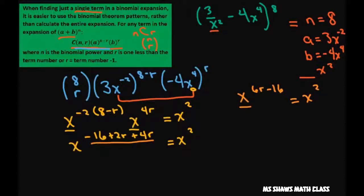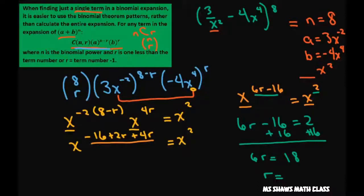Okay, then combining this we have x to the 6r minus 16 power equals x squared. Now once my bases are the same I just need to solve for r. So we have 6r minus 16 equals 2. Add 16 to both sides of the equation. You get 6r equals 18. Therefore r equals 3.